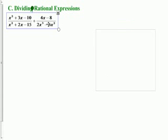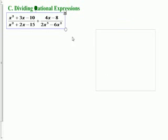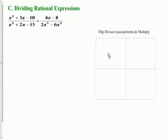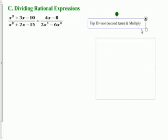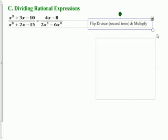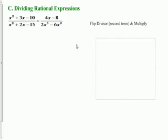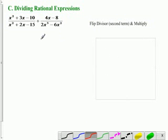We've got a new equation here that looks like we have a lot of factoring to do. But we have to start with something, and the first thing we're going to do, we are going to go ahead and flip the second term. That's what they call the divisor, and then we'll multiply. So that means this multiplication symbol is going to change.